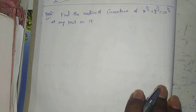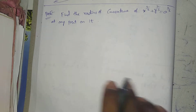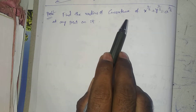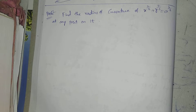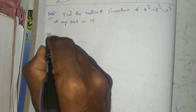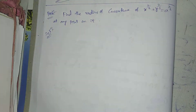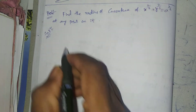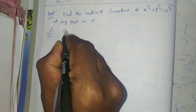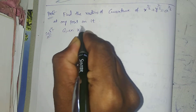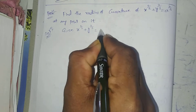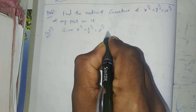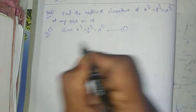Welcome to Rajesh Lekaloo. Today our topic is curvature. Find the radius of curvature of x^(2/3) + y^(2/3) = a^(2/3) at any point on it. Solution. Given x^(2/3) + y^(2/3) = a^(2/3). This is equation 1.